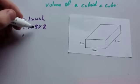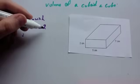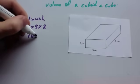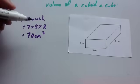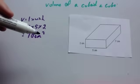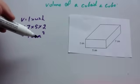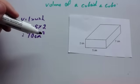7 times 5 is 35, times 2 is 70. So the volume is 70cm³. It's important to realize that for 3D shapes, the volume is measured in centimeters cubed, meters cubed, millimeters cubed, etc.